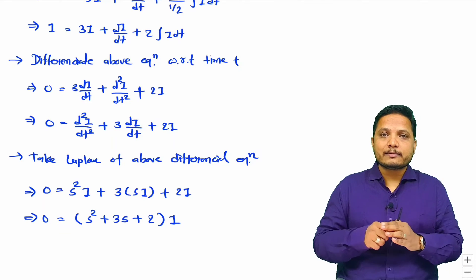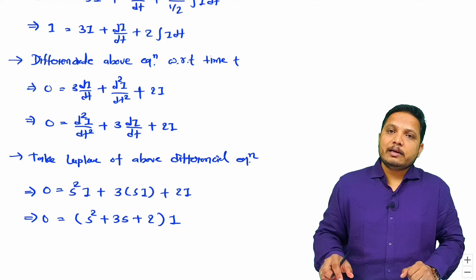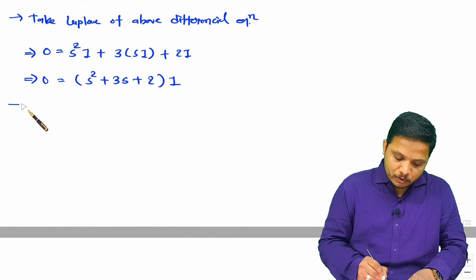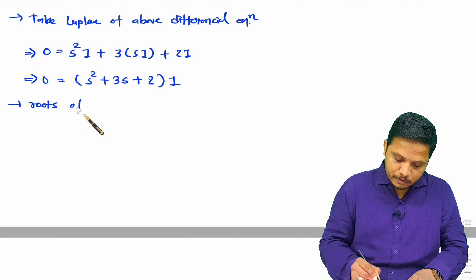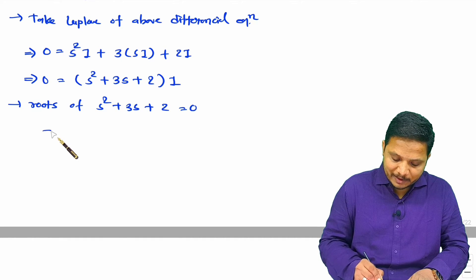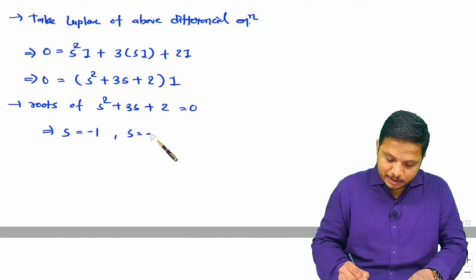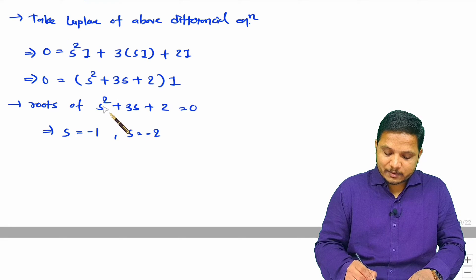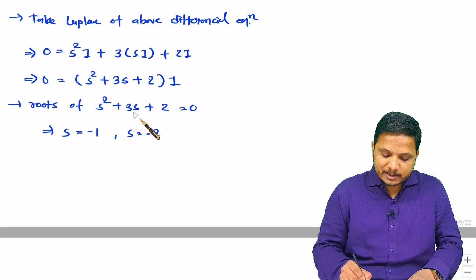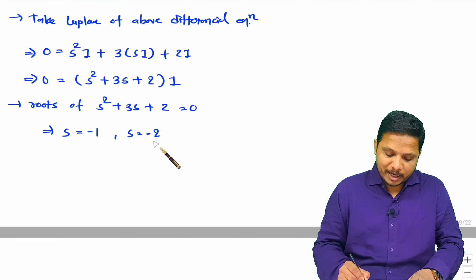To solve this, we identify the roots of the characteristic equation s² + 3s + 2 = 0. This factors as (s + 1)(s + 2) = 0, giving two roots: s equals minus one and s equals minus two.